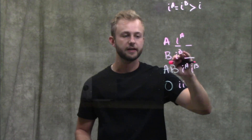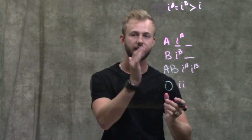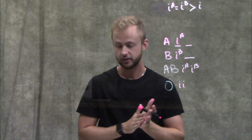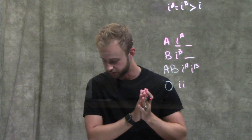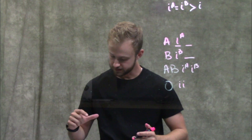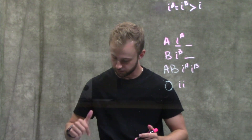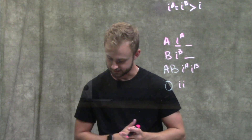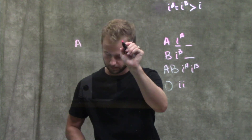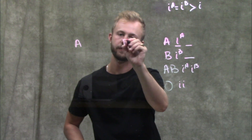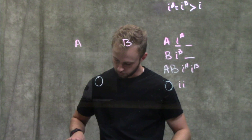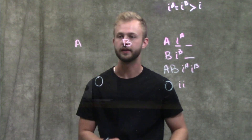Now that we understand what's required to have each of these different blood types, we can look at an example problem. In Campbell Biology's 11th edition, this is question two at the back of chapter 14. It says a man with blood type A marries a woman with type B blood, and their child has type O blood. What are the genotypes of these three individuals?